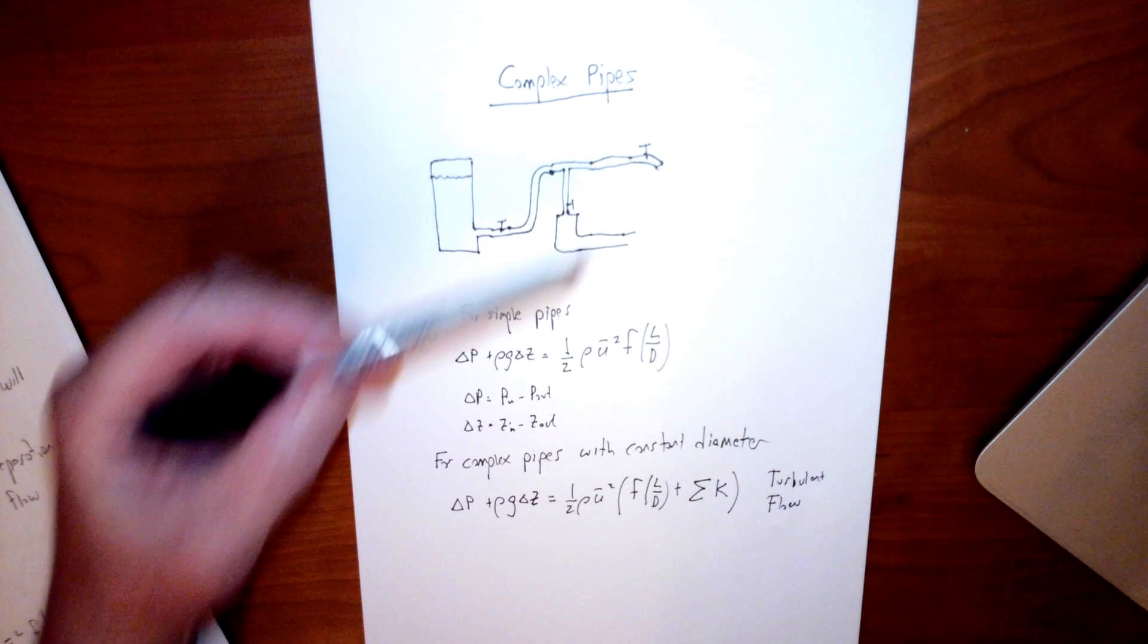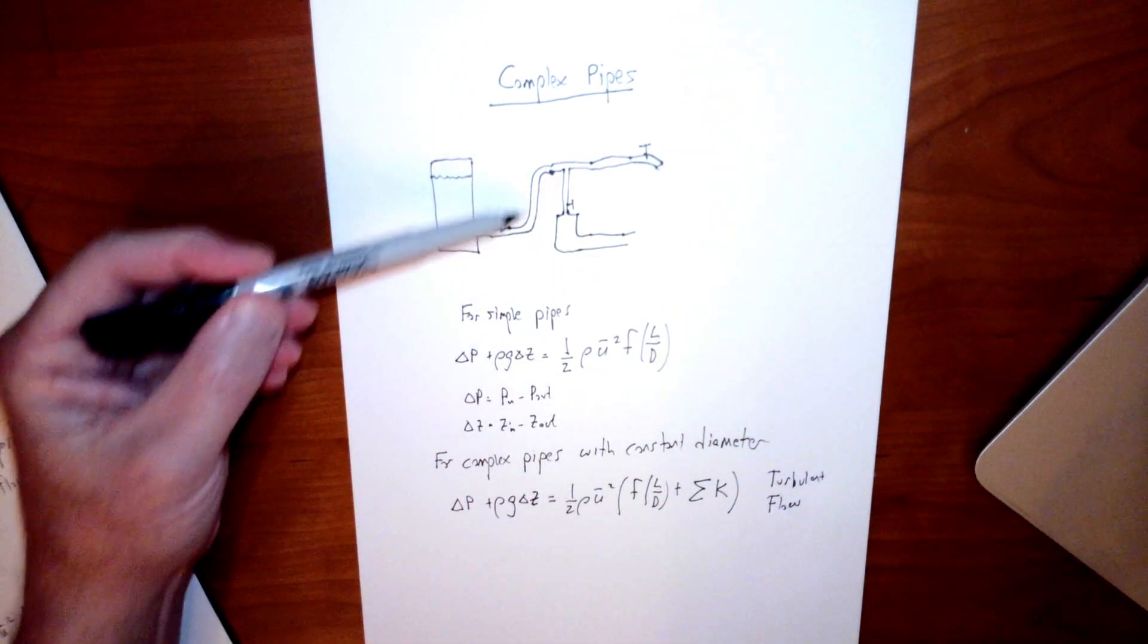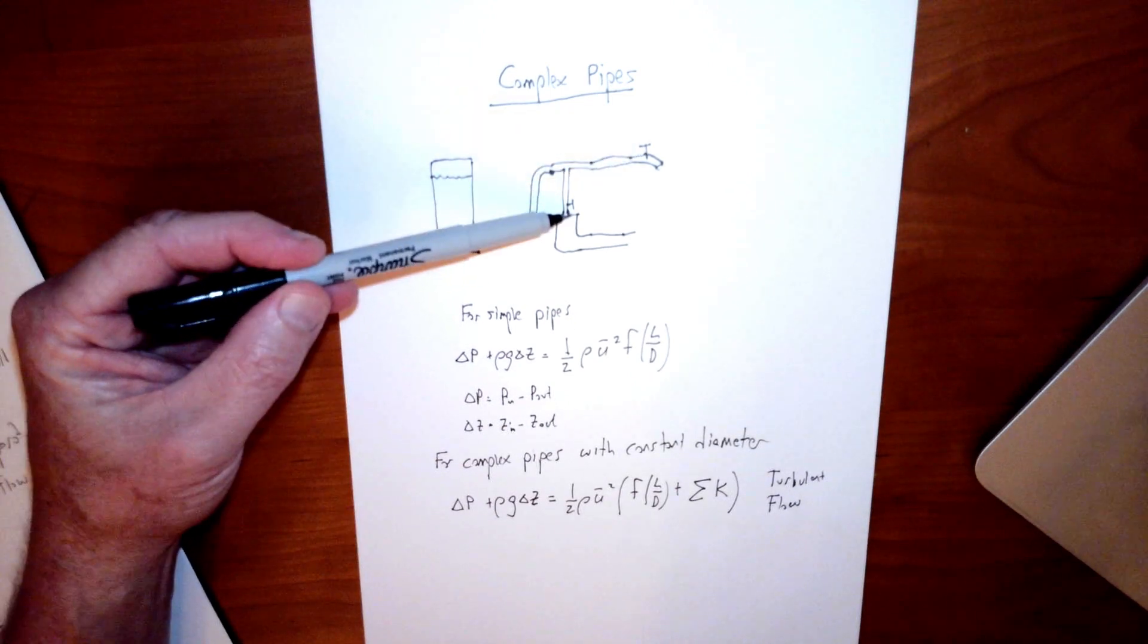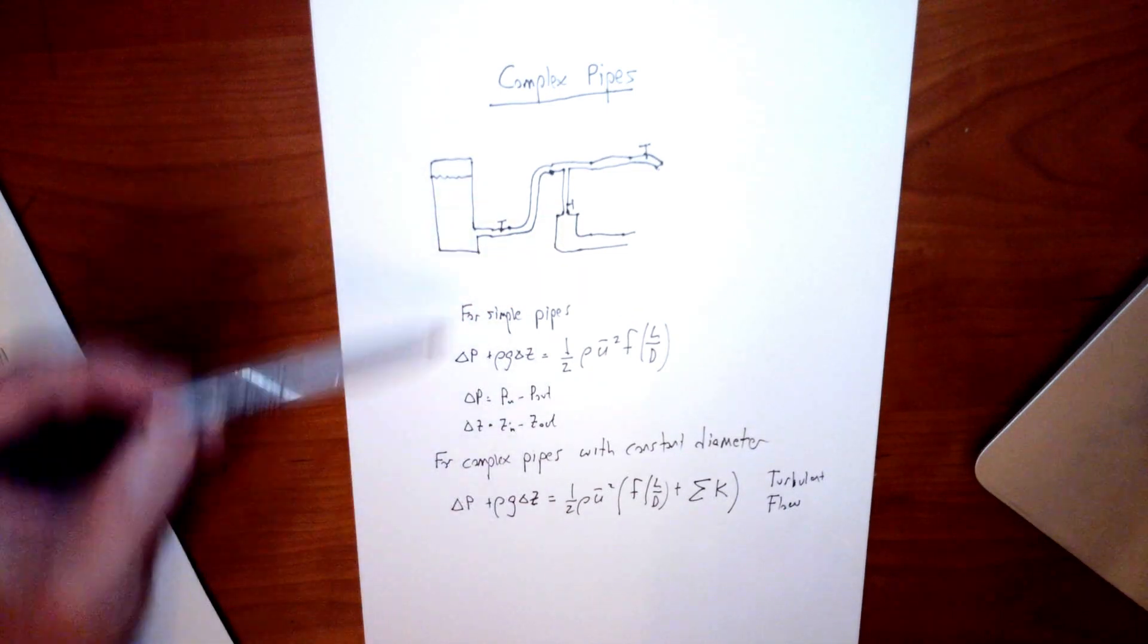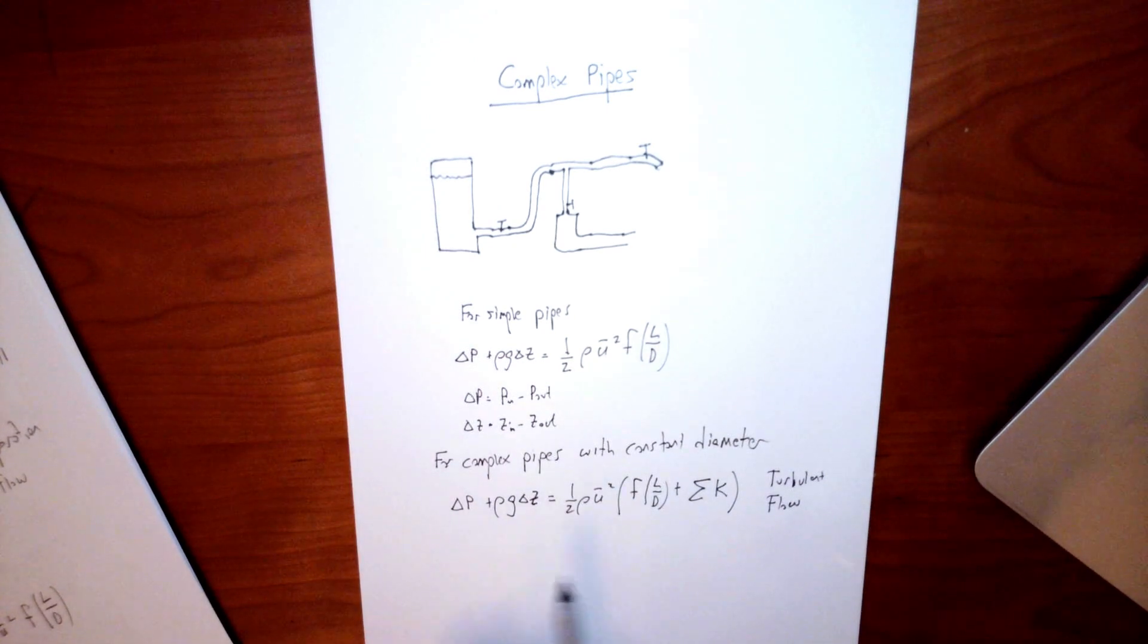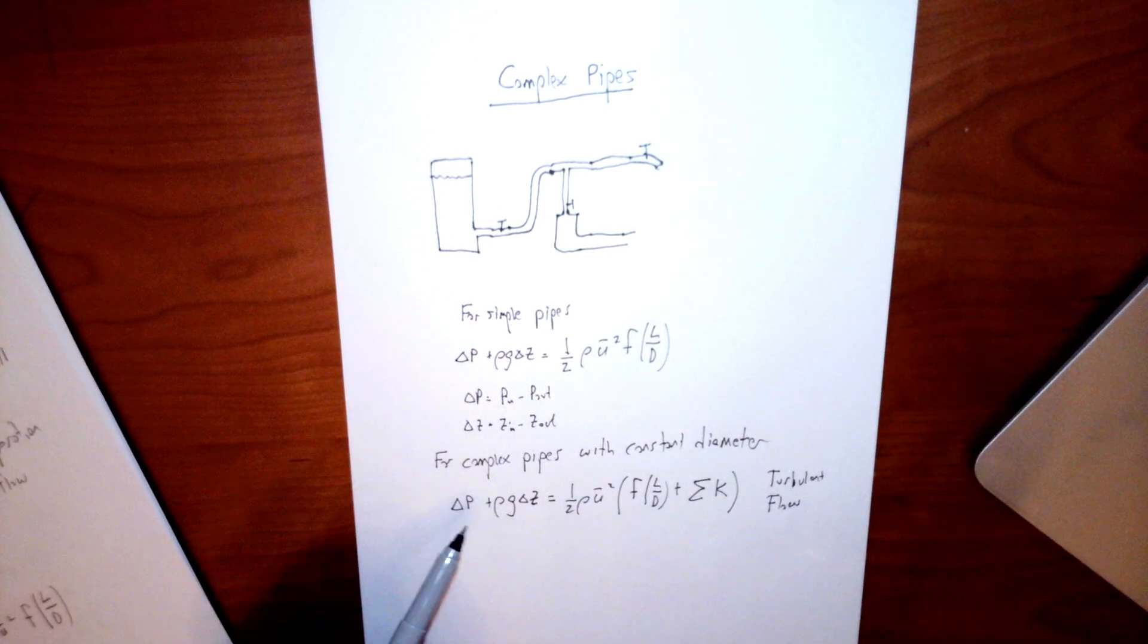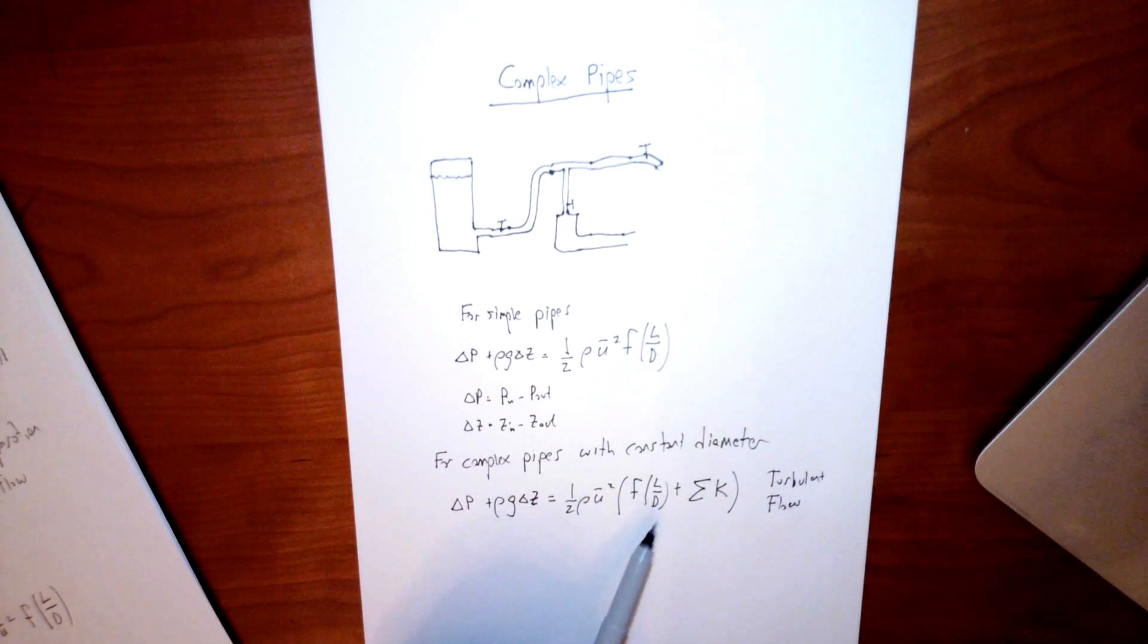If you have complex pipes like this, if the pipe has a constant diameter you can write it like this. So this does not have a constant diameter. I've clearly drawn this pipe to be much larger than this so this would not apply to this pipe yet. We'll come up with a new relationship for that. For one where you have a lot of complicated things happening, valves, bends, whatever, but it's constant diameter, you can rewrite this equation in this way. So you have delta P, rho G, delta Z on the left just like we did before. One half rho average velocity squared again just as we did before. But now we have an additional term. So we have the same F over LD term that is the frictional resistance in the pipe, as we would expect. But now we have the sum of K.